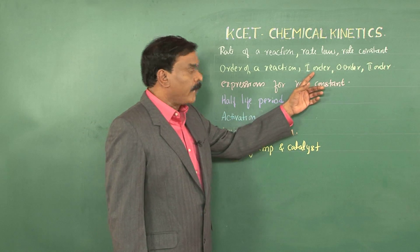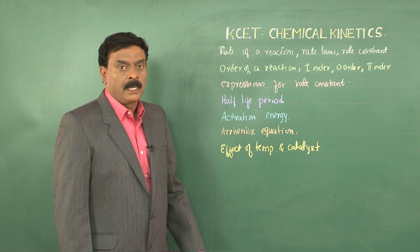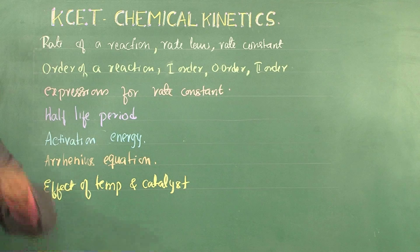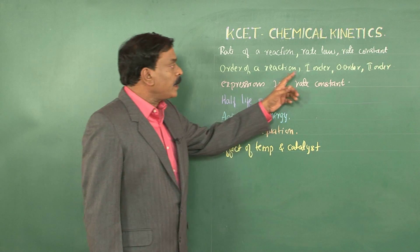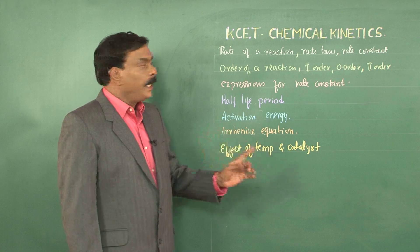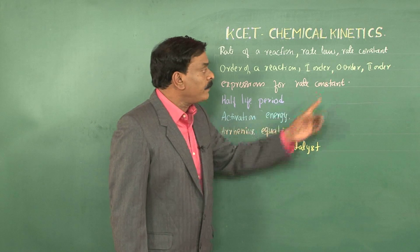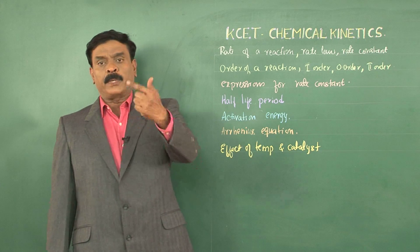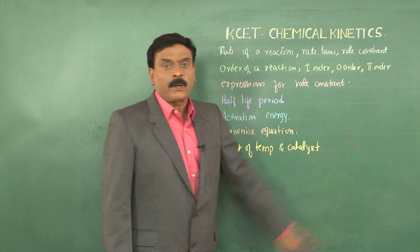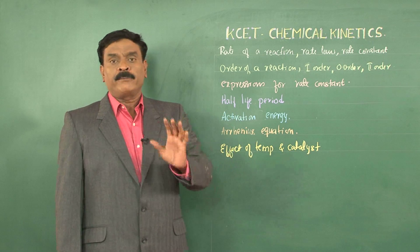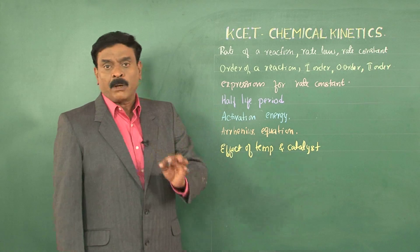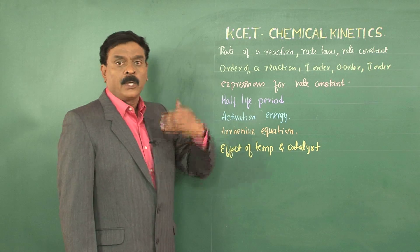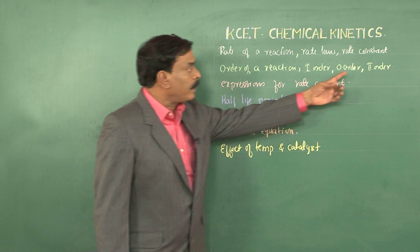If the order of a reaction is 1, we call it a first order reaction. An example of a first order reaction is decomposition of H2O2, where in the rate expression the concentration of the reactant is raised to power 1. In a second order reaction, the concentration of reactants is raised to power 2, or when you have two reactants, each is raised to power 1. An example of a second order reaction is saponification — the reaction of esters with a base, such as ethyl acetate reacting with NaOH to give sodium acetate and ethanol.